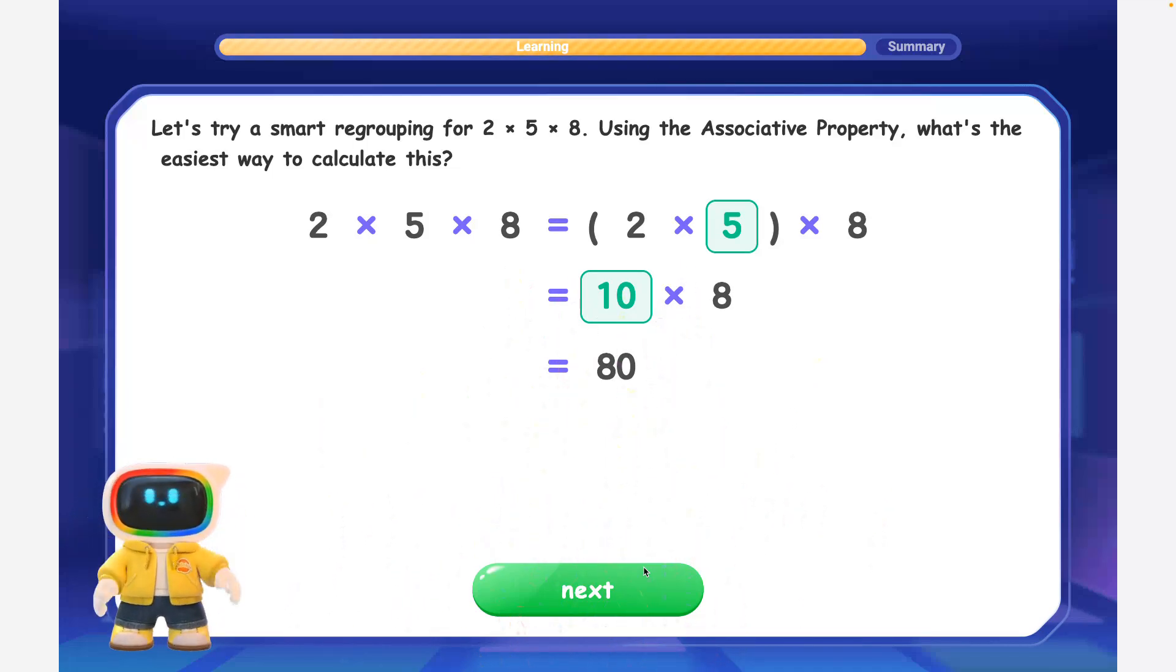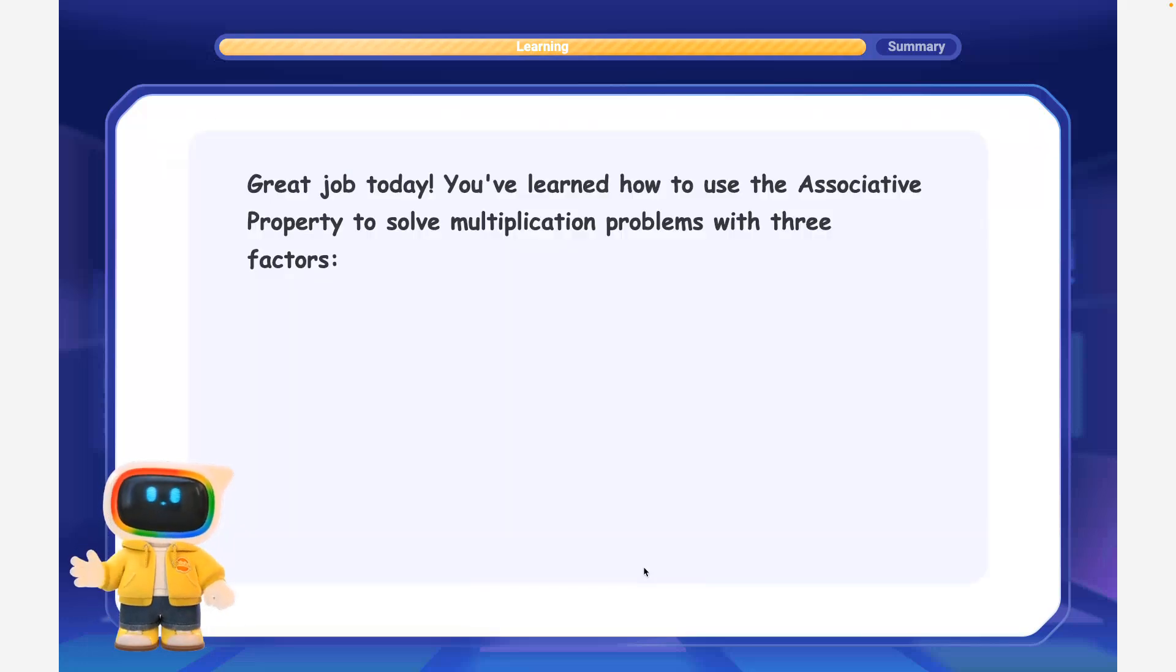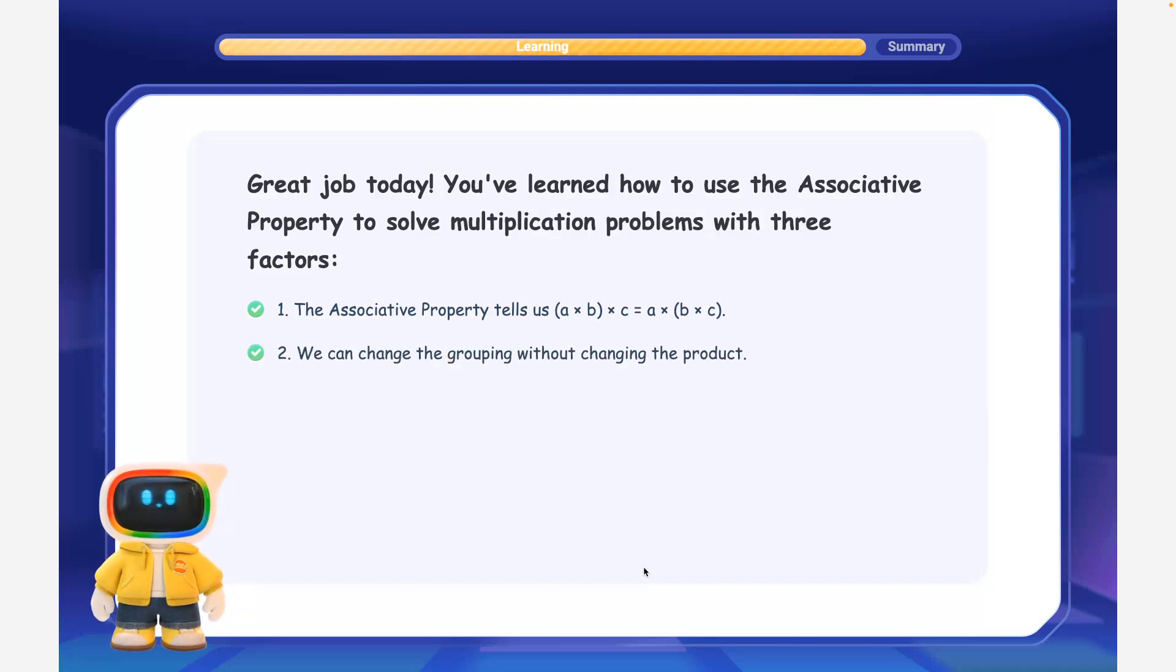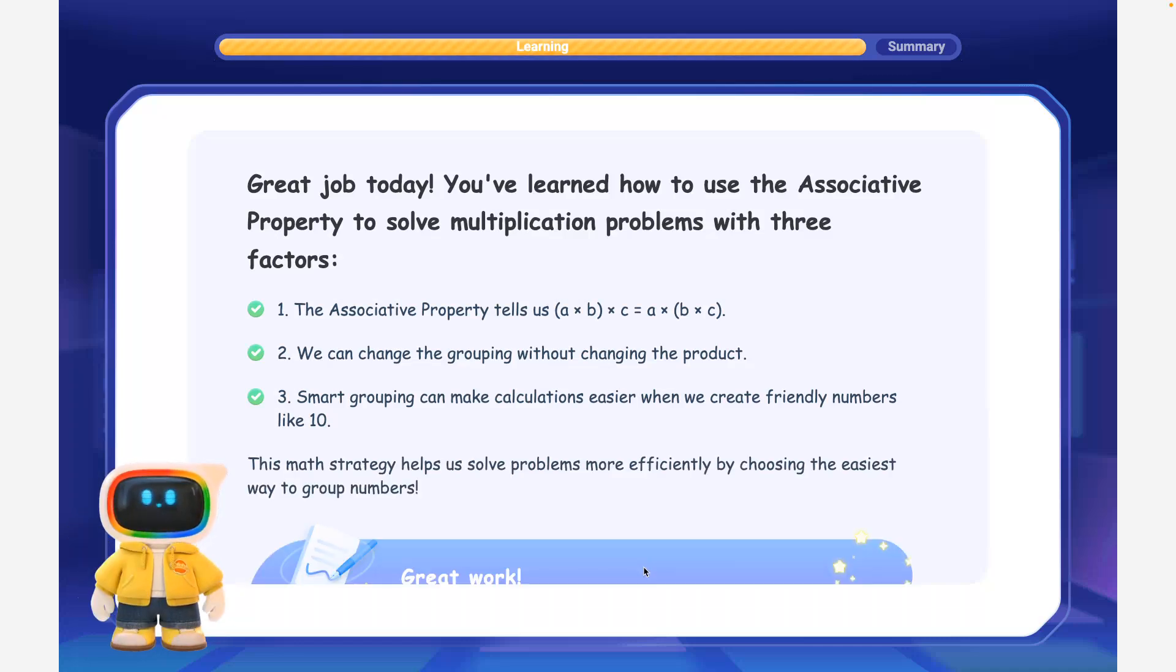Great job today! You've learned how to use the associative property to solve multiplication problems with three factors. 1. The associative property tells us a times b, times c equals a times, b times c. 2. We can change the grouping without changing the product. 3. Smart grouping can make calculations easier when we create friendly numbers like 10. This math strategy helps us solve problems more efficiently by choosing the easiest way to group numbers.